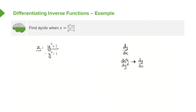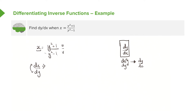So instead of rearranging, we momentarily differentiate x with respect to y, with the condition that at the end we swap them — bringing dy back to the top and dx to the bottom so that it becomes the gradient dy/dx. So we want to find dx/dy. Looking at our function, it is one function divided by another, so we need to use the quotient rule.